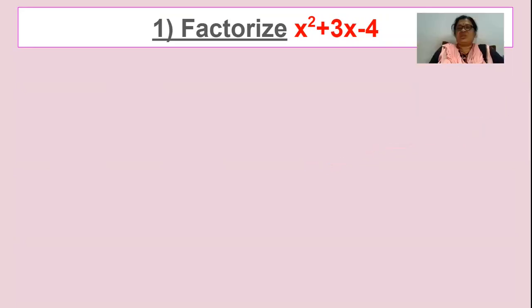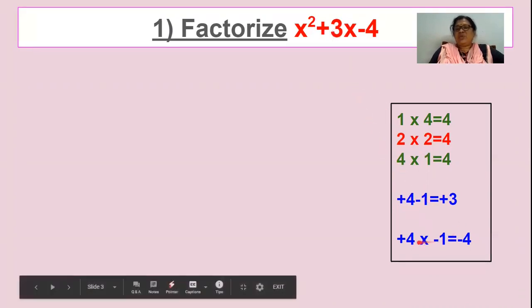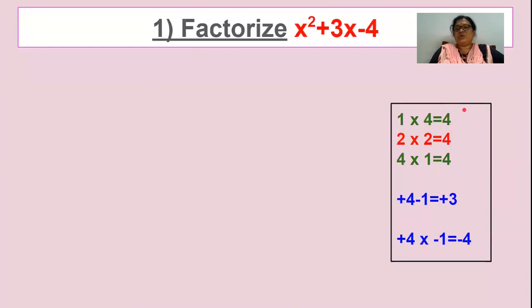First we will cover factorization. Factorize x squared plus 3x minus 4. The constant here is 4. You have to find out factors for 4 — select two numbers such that when you multiply you get minus 4, and when you add you get plus 3. Here, 1 and 4 are the factors since 2 times 2 is not valid for this case. So the selected factors are plus 4 and minus 1: plus 4 minus 1 gives plus 3, and plus 4 times minus 1 gives minus 4.